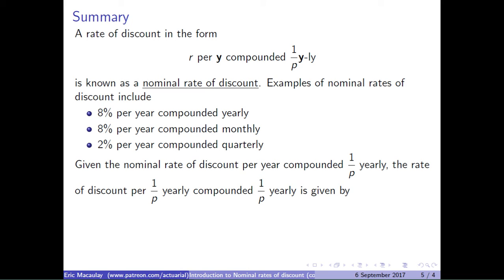Given the nominal rate of discount per year compounded 1 over p yearly, the rate of discount per 1 over p yearly compounded 1 over p yearly is given by per of 1 over p of r, where per of p of r is defined as equal to r times p.